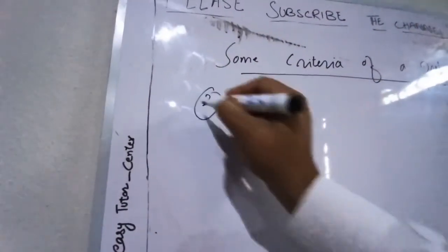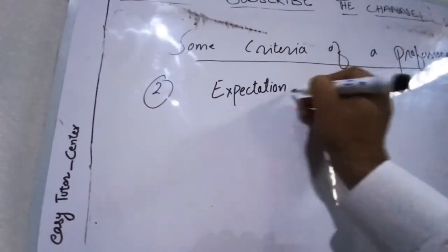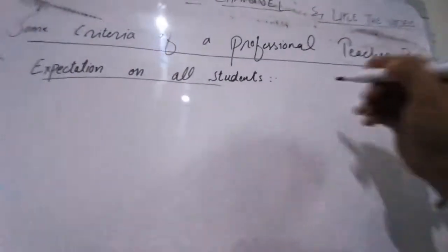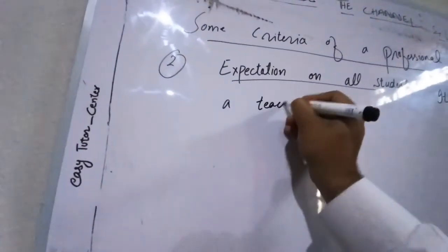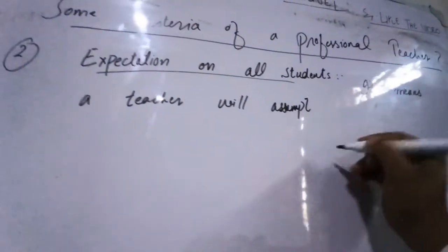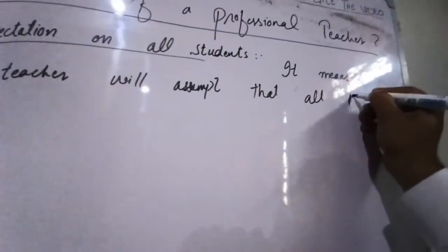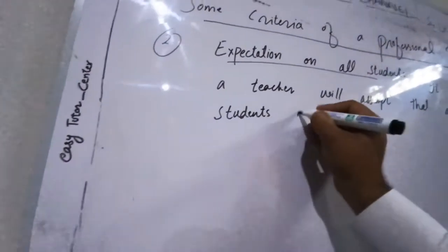Number two: expectation on all students. It means a teacher will assume that all the students are capable. This will make it easy for a teacher.